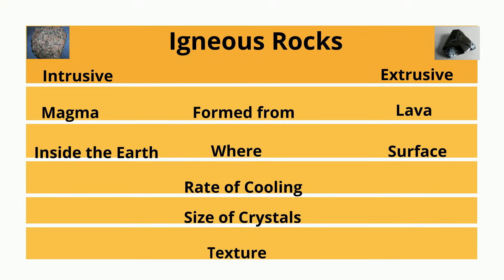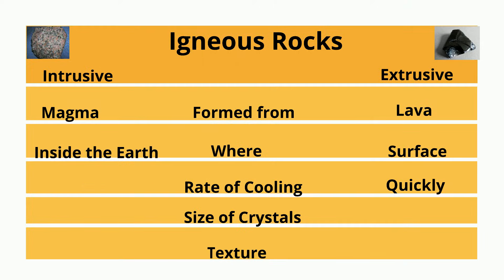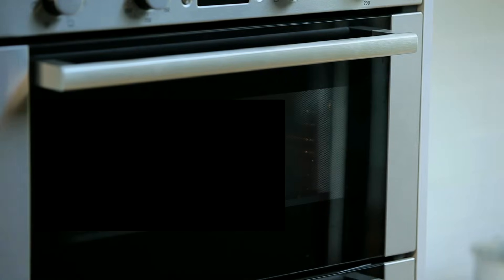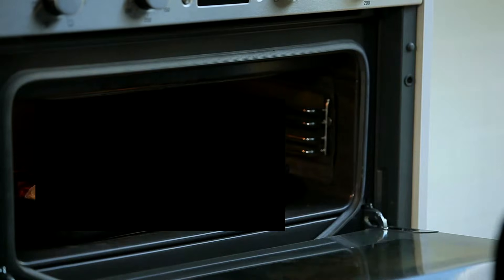Extrusive rocks cool quickly. Intrusive rocks cool slowly because they are inside the earth, which acts a little bit like an oven, and that slows the rate of cooling.